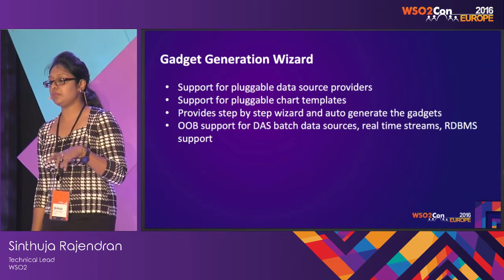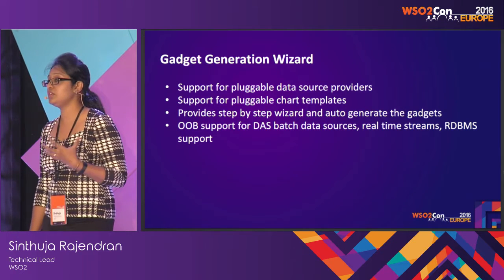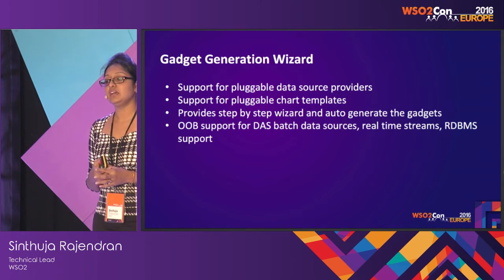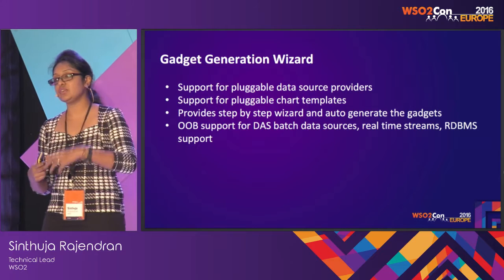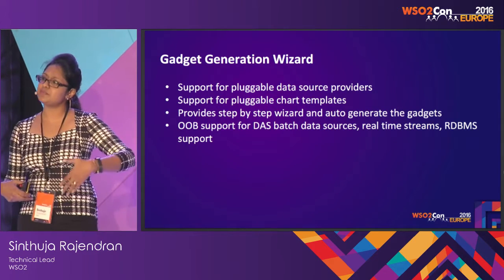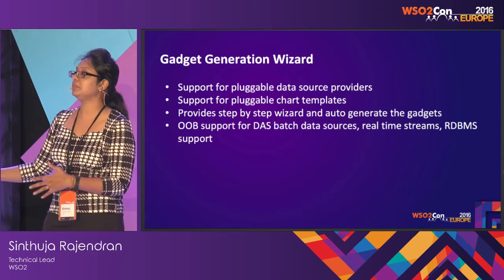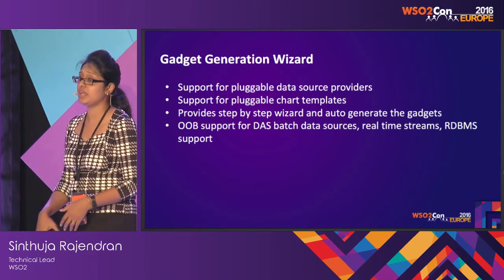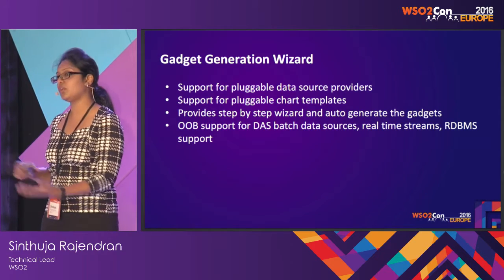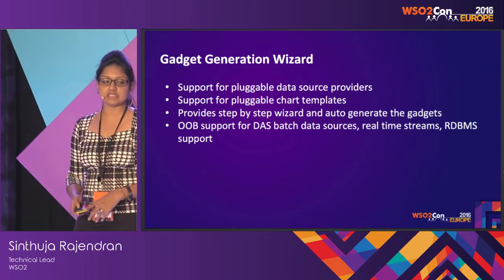We are also going to incorporate a gadget generation wizard to make life easier. Instead of asking all users to develop their own gadgets, the wizard takes you through a series of steps to generate your own gadgets. We are planning to make it pluggable, so any providers will be able to plug into the system. By default, we support a batch data source from DAS, a real-time data source via web service specifically for CEP, and RDBMS. If you have a completely different data source specific to your organization, you can still plug it in. We also have a pluggable model for chart templates — line chart, area chart, bar chart, and more — and if you want something totally different, you can plug that in as well. This gadget generation wizard is still in progress and will be released with the next GA release.